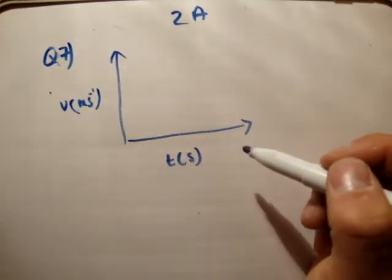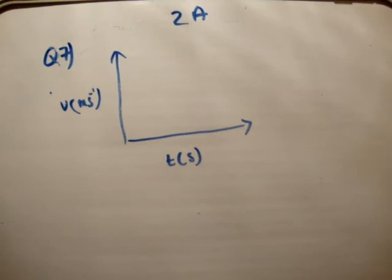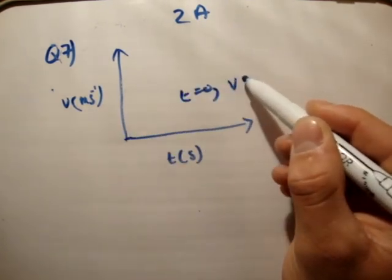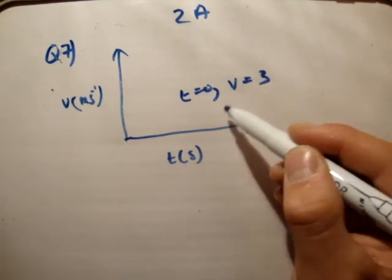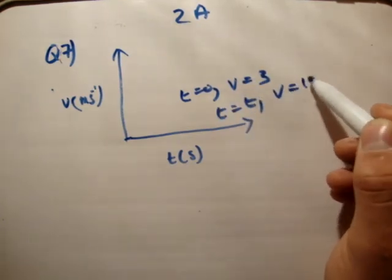But, we're told that he accelerates uniformly from 3 metres to 11 metres. So, at time t equals 0, his speed is equal to 3, and at time t equals 6, his speed is equal to 11.